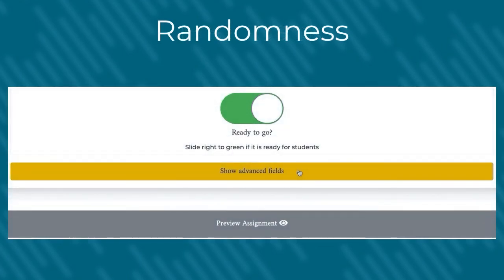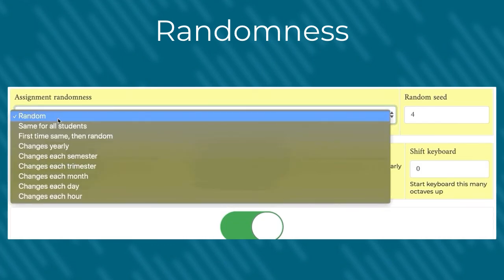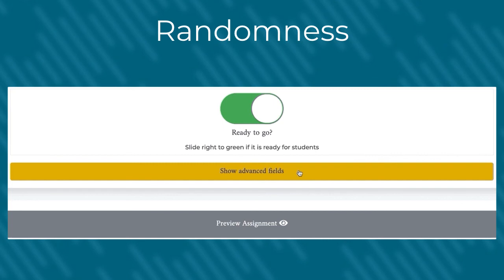Randomness can also be changed. From the assignment editor, you can click Show Advanced Fields, and then you'll get a drop down menu from which you can select the randomness that will be used.